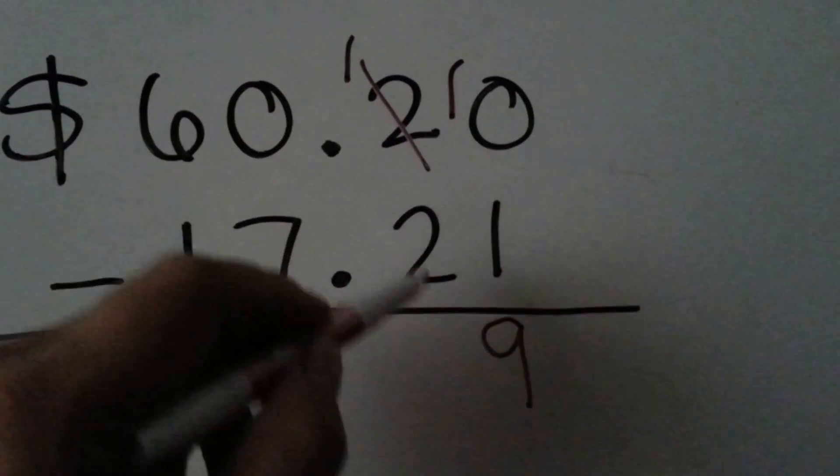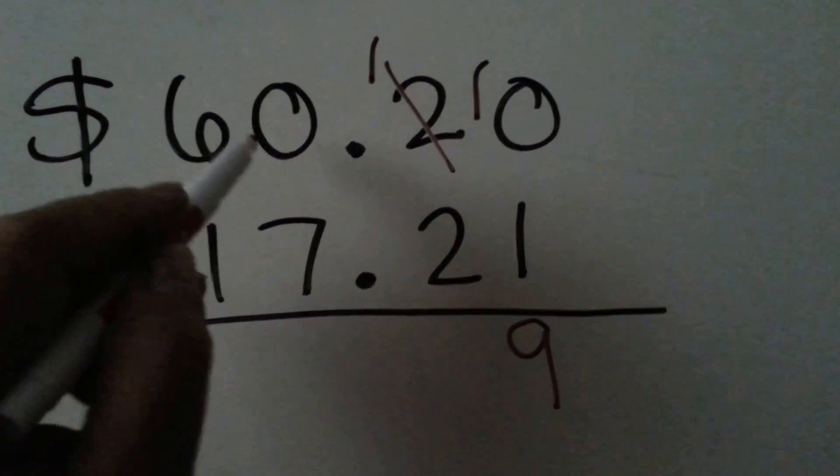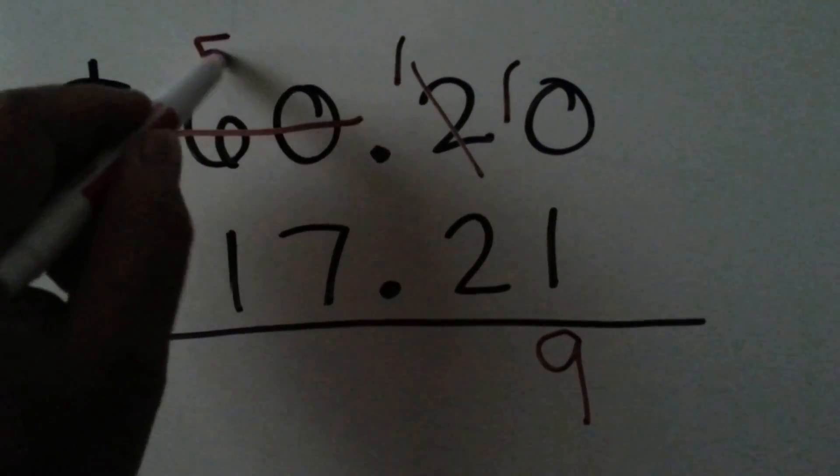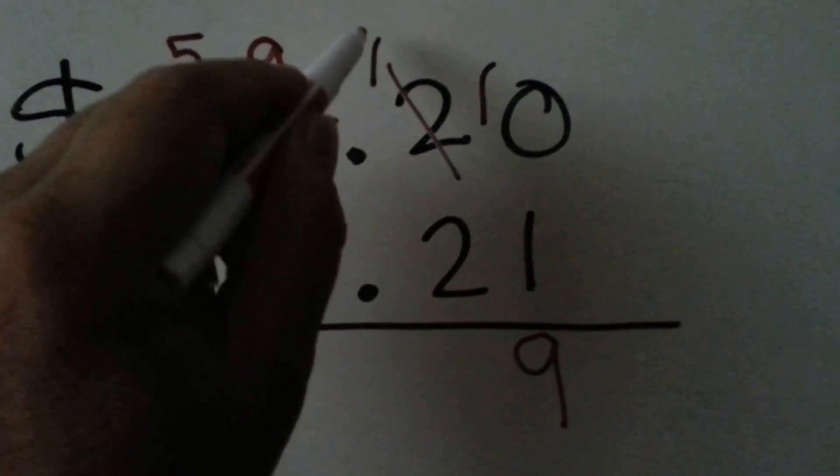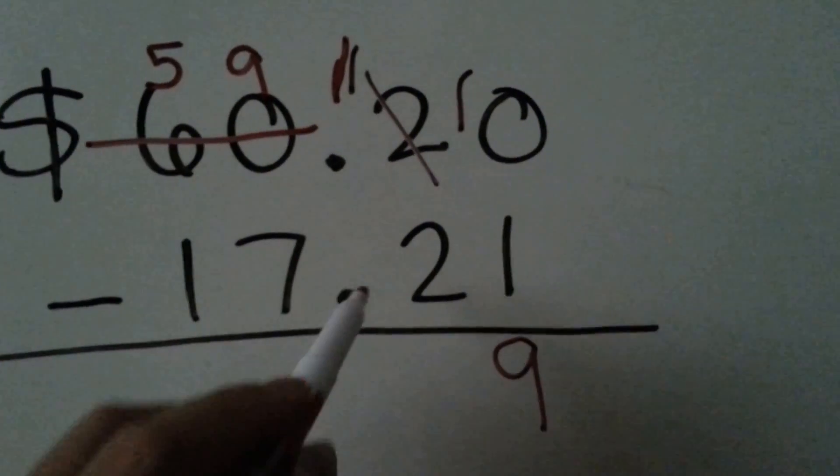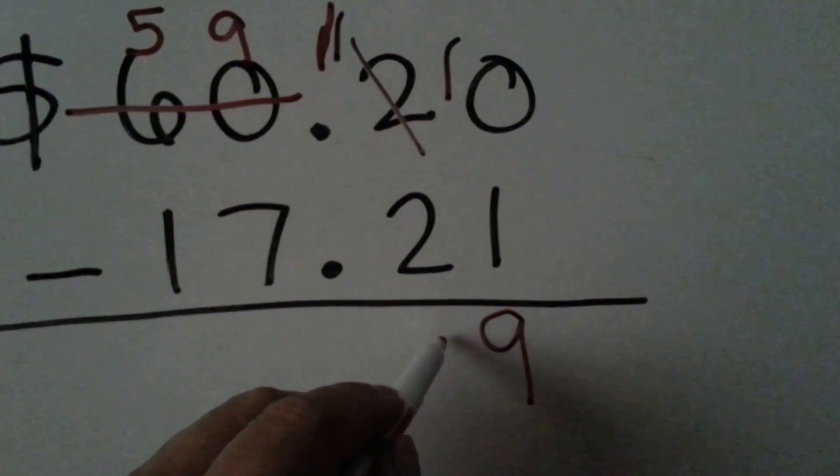You can't have one and take two away so we need to borrow it from the sixty. The sixty becomes a fifty-nine and this one now becomes an eleven. Eleven take away two is nine.